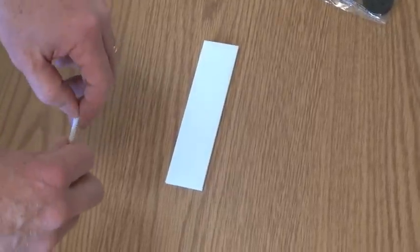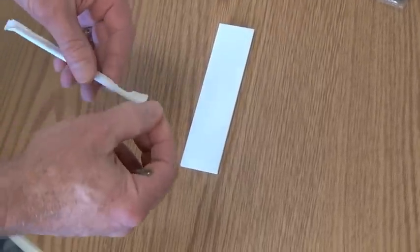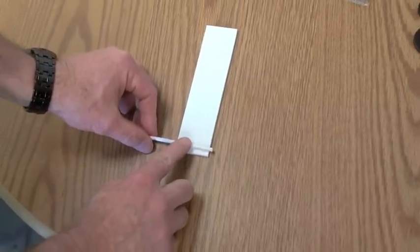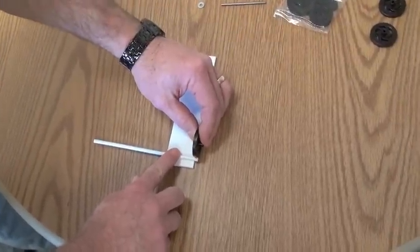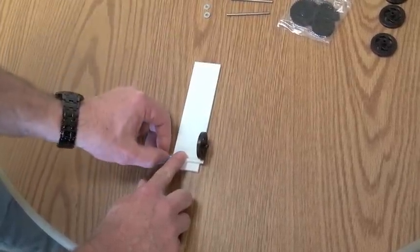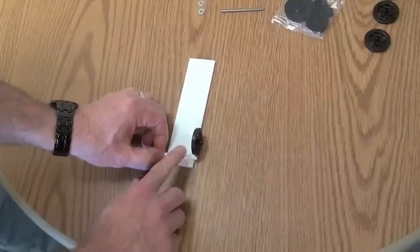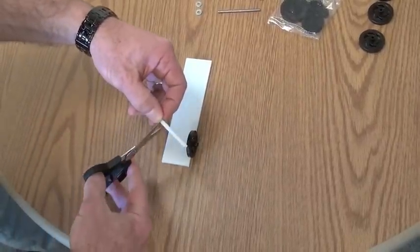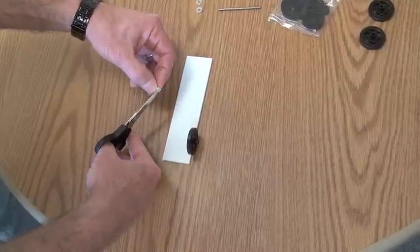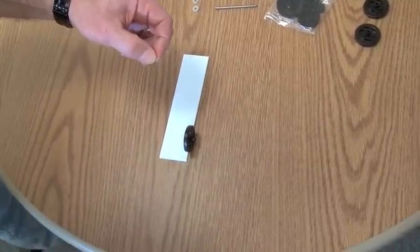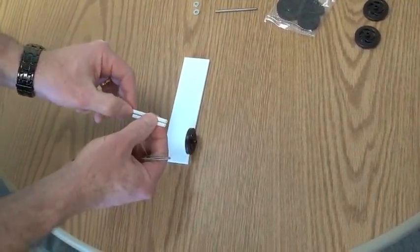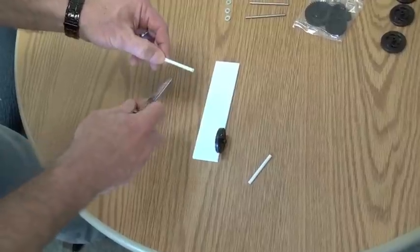First we're going to open up our straw package, take the straw out and disregard that, and hold it up to your car body. You can take a wheel and make sure it sticks out approximately a quarter inch past, and then you're going to want to take your straw and cut that at that length, and do a nice straight cut if you can. And there you have your straw, and I'm going to get another piece of straw. I'm going to cut that the exact same length as my first piece.